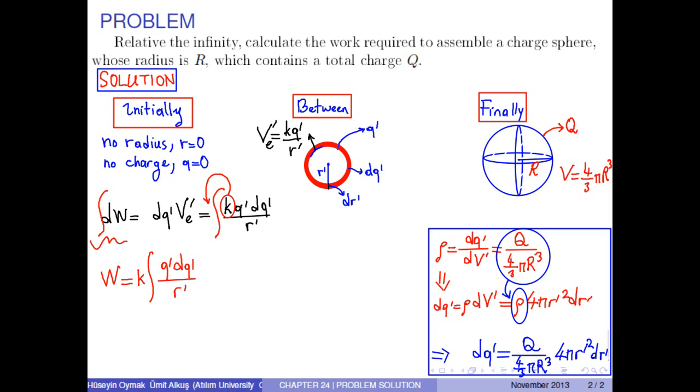4 pi's cancel each other, so we obtain the infinitesimal charge dq' as 3 times Q times r' squared over R cubed times dr'.